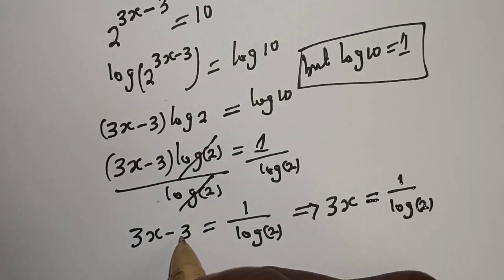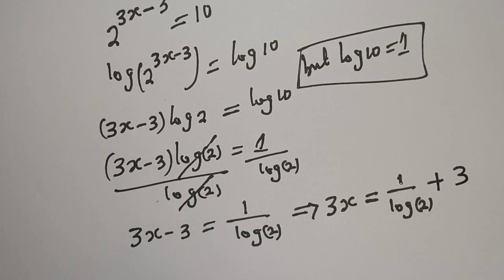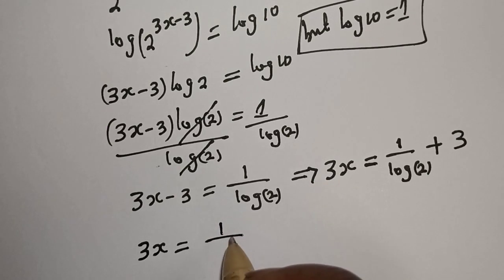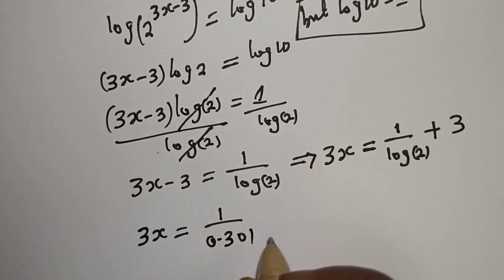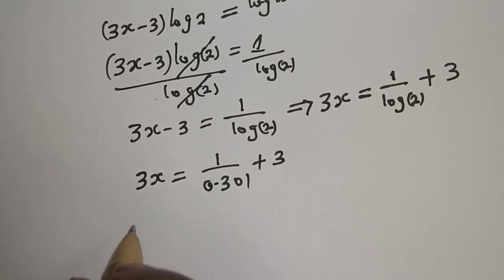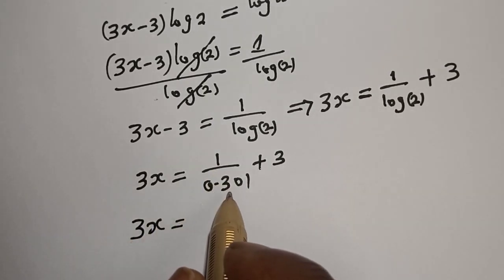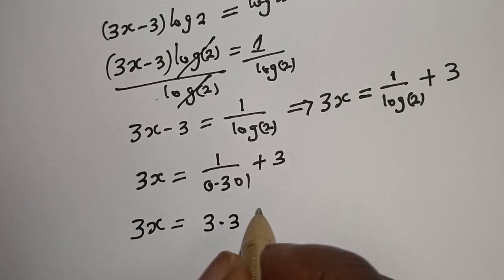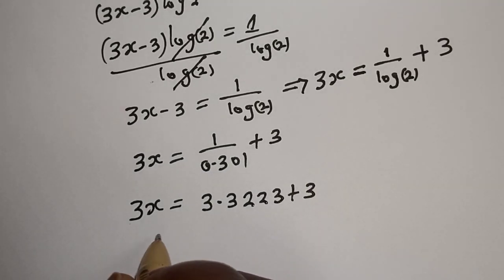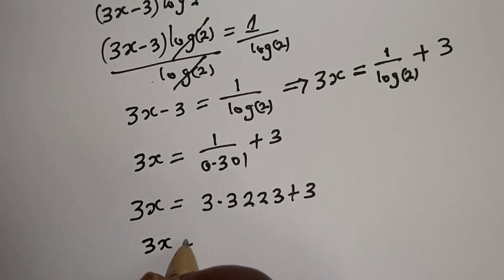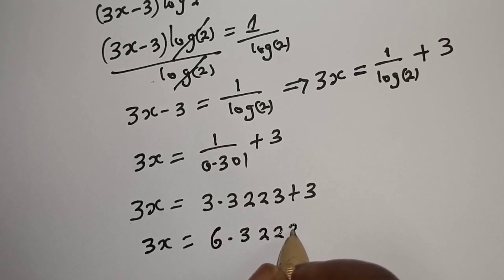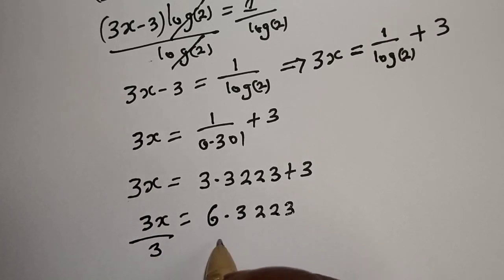If you bring this 3 to the other side, it becomes plus 3. So 3s is equal to 1 over log 2, and log 2 is 0.301, plus 3. That gives 3s is equal to 1 divided by 0.301, which is 3.3223, plus 3. So 3s is equal to 3.3223 plus 3, that is 6.3223.